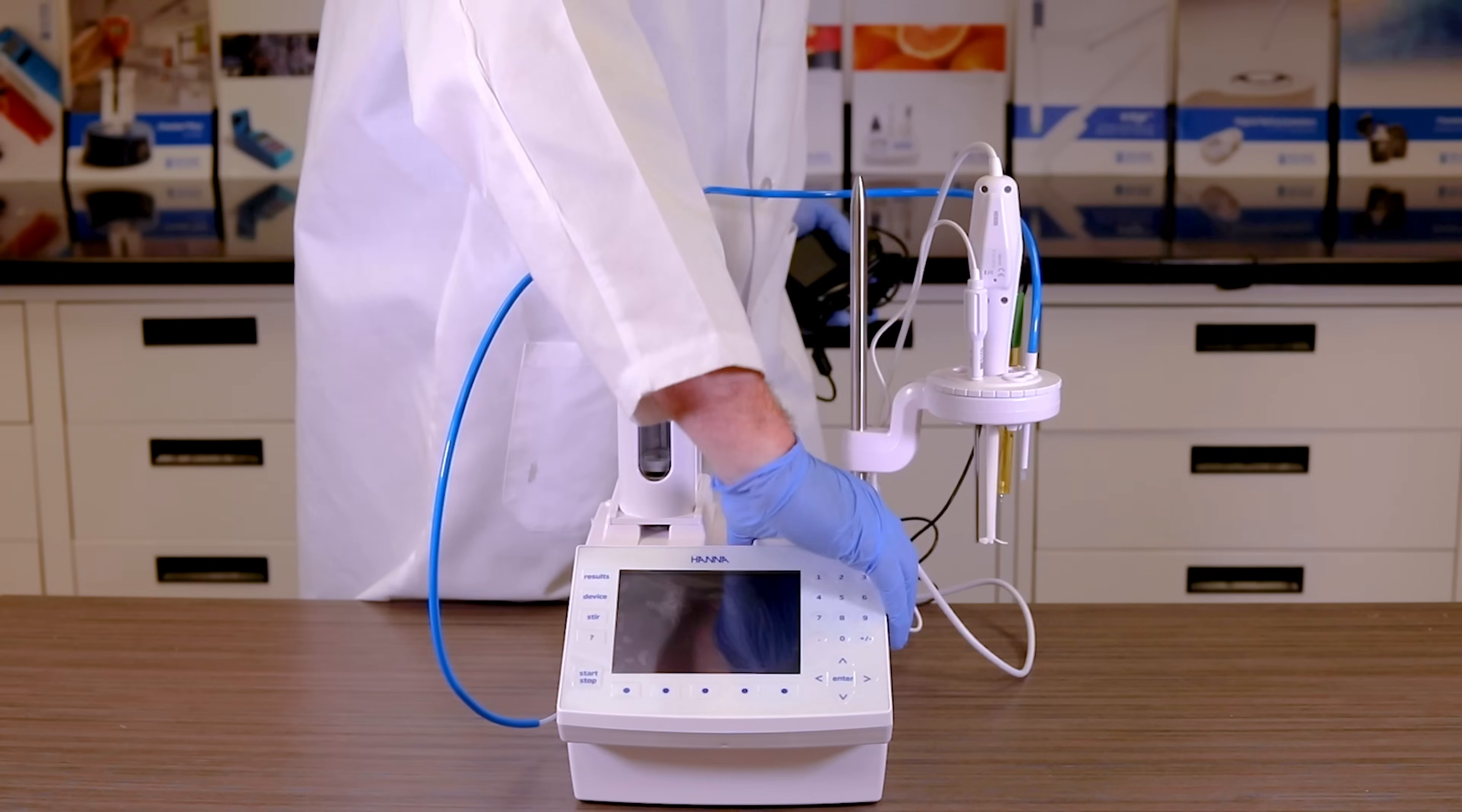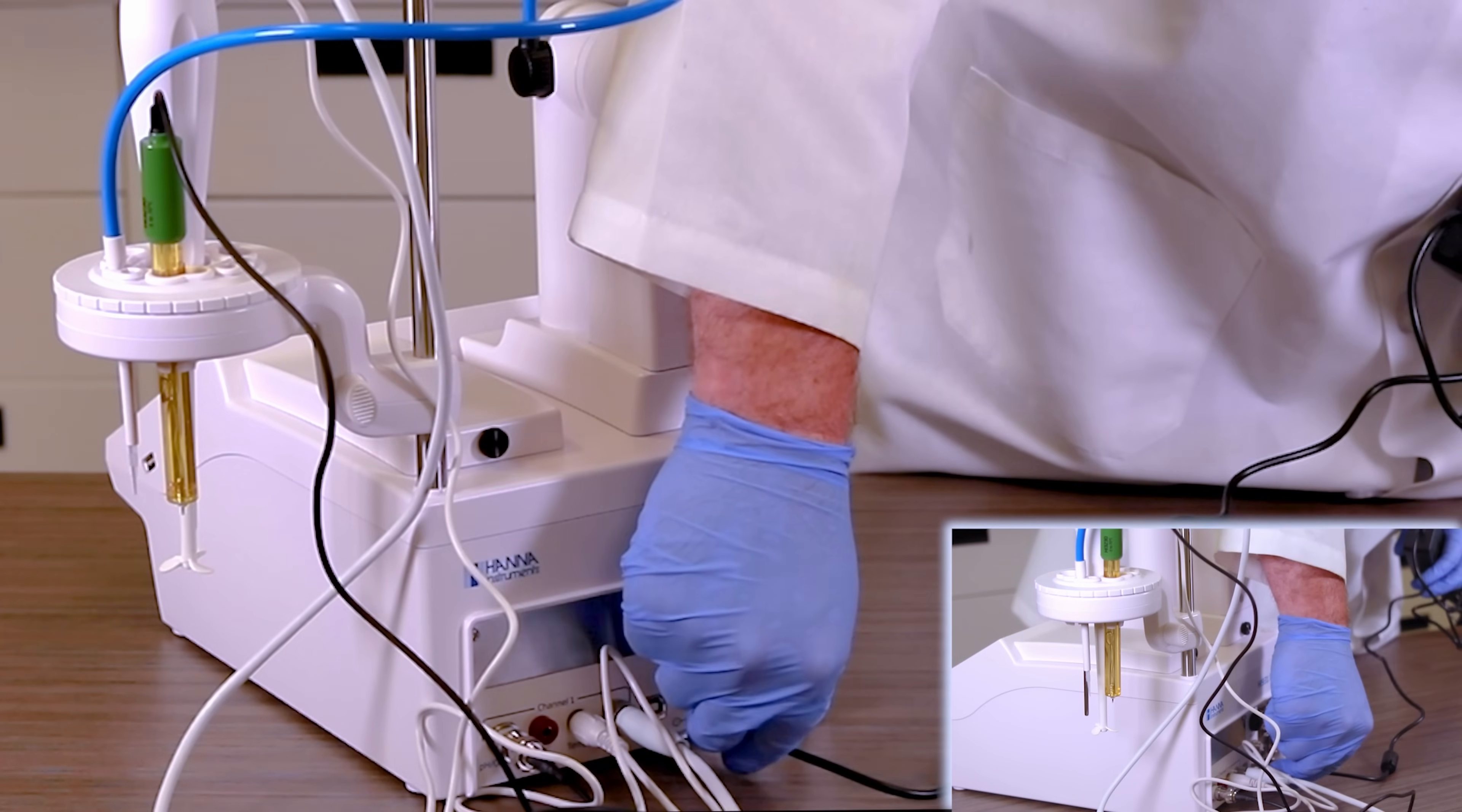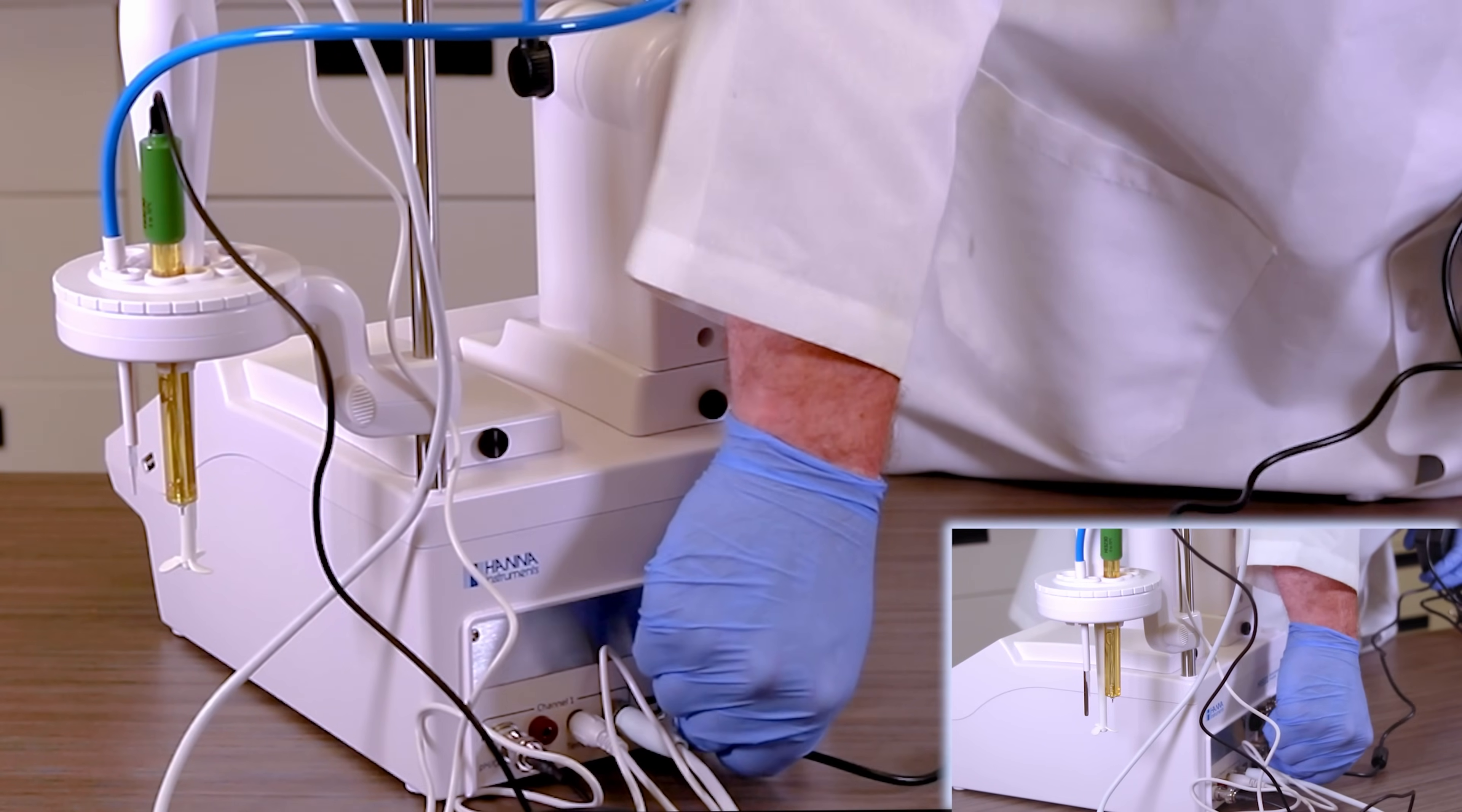Locate your power cord and adapter. Connect the power cord to the adapter and insert it into the power slot located on the back of the titrator.